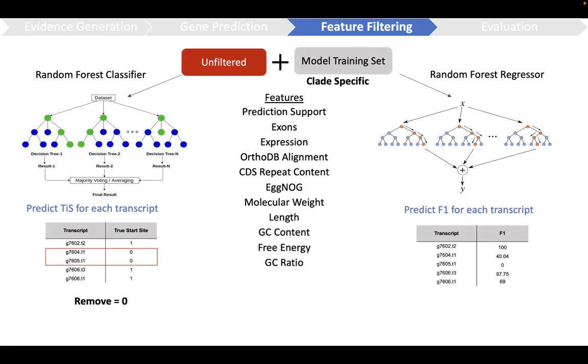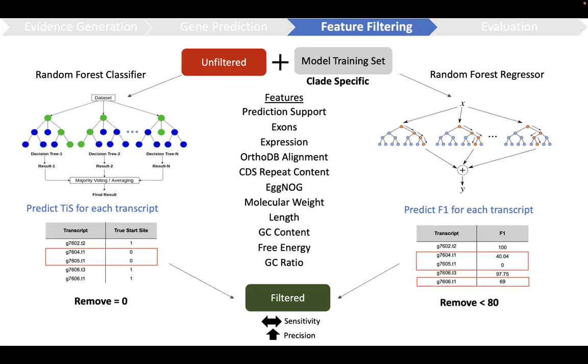The regressor, on the other hand, predicts F1, which is a continuous metric of quality. Everything under 80 is removed. Combined, both algorithms filter the structural annotation, maintaining sensitivity but increasing precision.